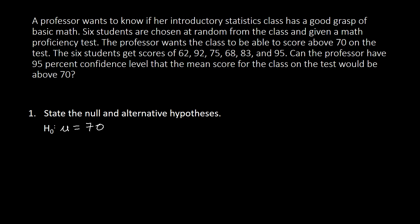And then our alternative is our mean here, mu, is going to be greater than 70. So let us go to the second one, determine the appropriate test to be used. Since this is one sample and we've got only N or the sample size of six students, then we will be using one sample t-test.